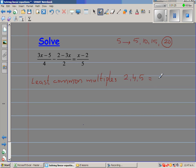The least common multiple is 20. What am I going to do with this 20? I am going to multiply all the numerators by 20. So this becomes 20(3x - 5)/4 - 20(2 - 3x)/2 = 20(x - 2)/5.